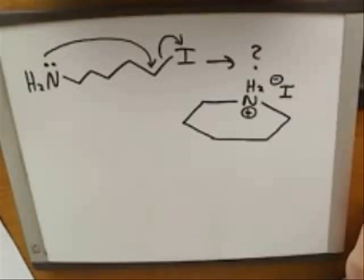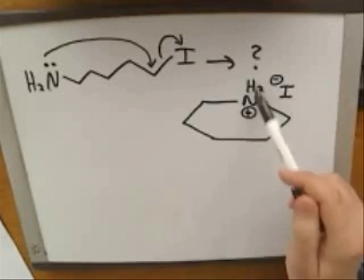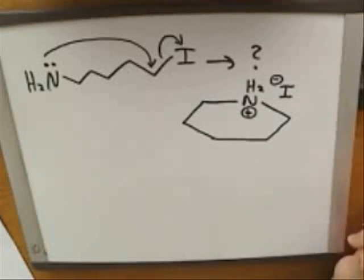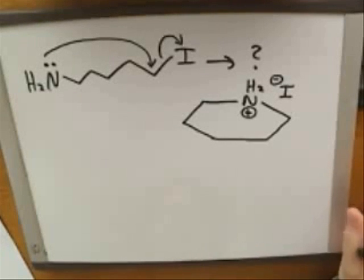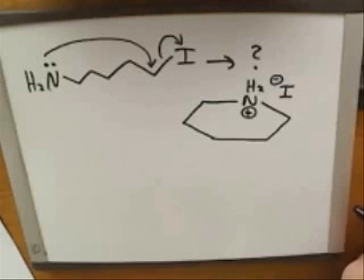Also, you might have broken some bonds that you shouldn't have. Perhaps some of you broke the hydrogens off of the nitrogen, but you can see they're not breaking off. So it's important to know which bonds not to break. And here's something else many might get wrong: not getting the charges right — for example, not realizing that the nitrogen ends up with a positive charge.